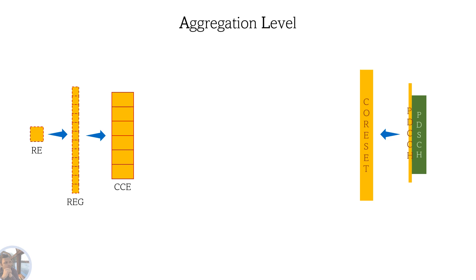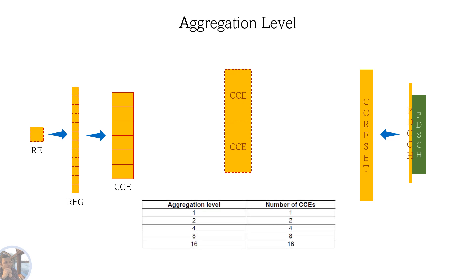Aggregation level. It gives how many CCEs are allocated for a PDCCH. There are different aggregation levels: aggregation level 1, 2, 4, 8 and 16. Aggregation level 1 maps to 1 CCE and aggregation level 2 maps to 2 CCEs and so on.